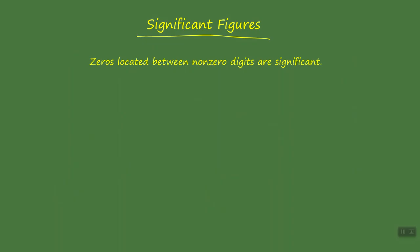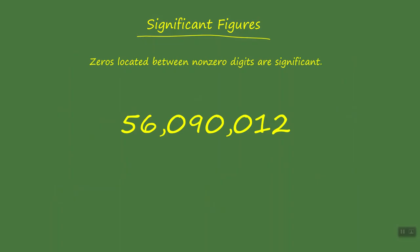Let's move on to our second guideline: zeros located between non-zero digits are significant. Our example 56,090,012 has three zeros in it. We see a zero encapsulated by a six and a nine, or between two non-zeros, and we see two zeros both between the digits nine and one — again, non-zeros. The zeros are significant because they all occur between non-zero digits, so we have a total of eight significant figures in this example.